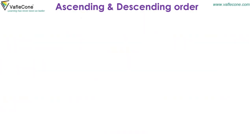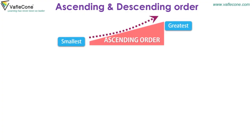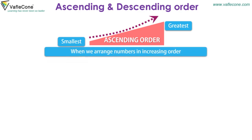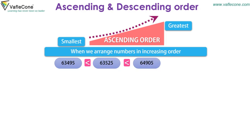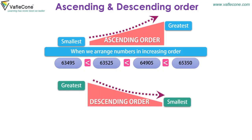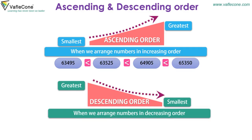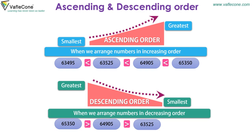Ascending and descending order. Ascending order means arranging numbers in increasing order. For example: 63,495 < 63,525 < 64,905 < 65,350. Descending order means arranging numbers in decreasing order. For example: 65,350 > 64,905 > 63,525 > 63,495.